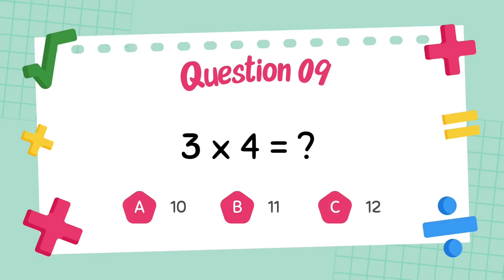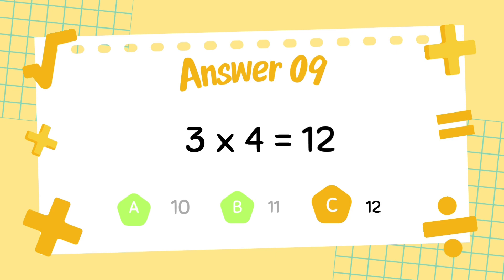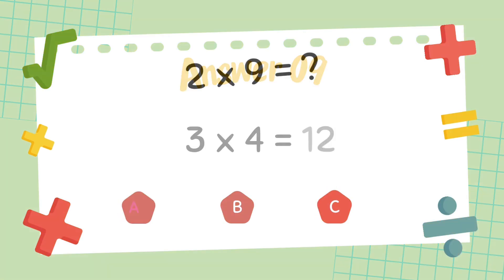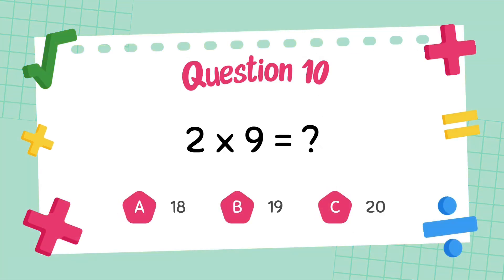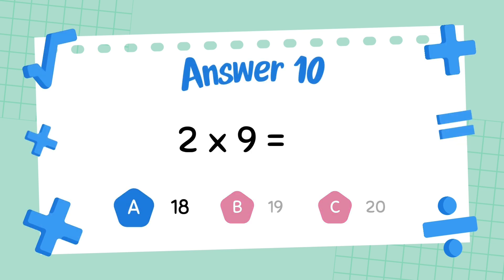What is 3 multiply 4? The answer is 12. What is 2 multiply 9? The answer is 18.